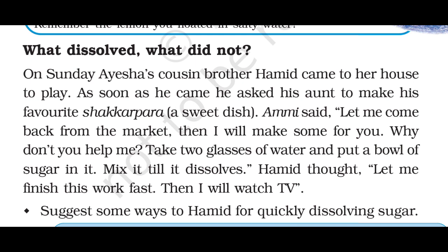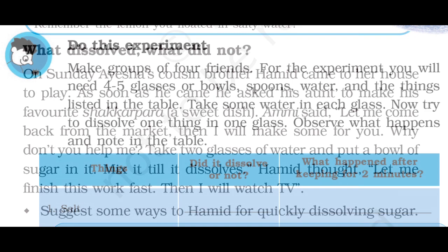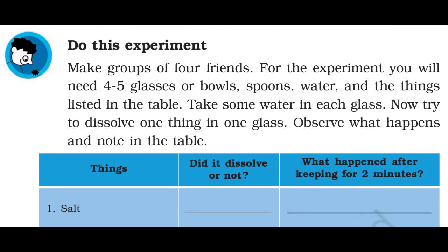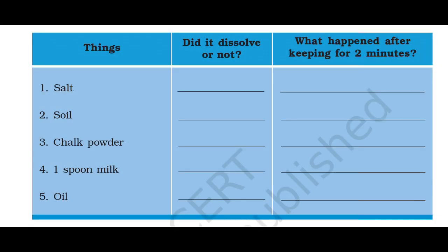For this, we will do an experiment. Open page number 64. The requirements are: 4-5 glasses or bowls, spoons, water, and the things listed in the table. These are: Salt, Soil, Chalk Powder, Milk, and Oil. By doing this experiment, we will know what dissolves in water and what does not — water mein kya ghulta hai aur kya nahin ghulta hai.